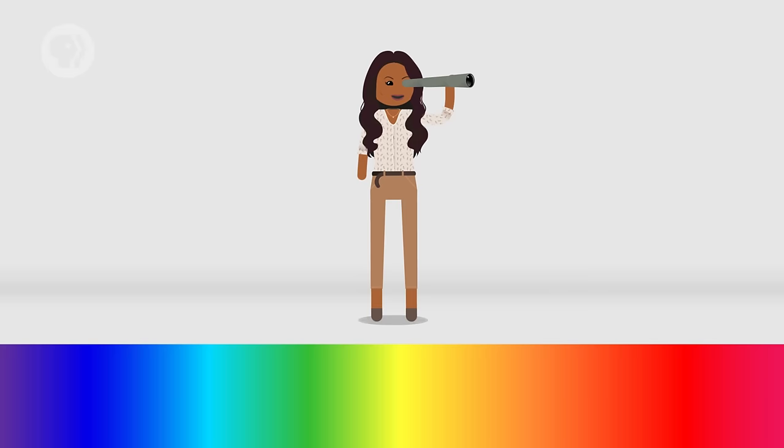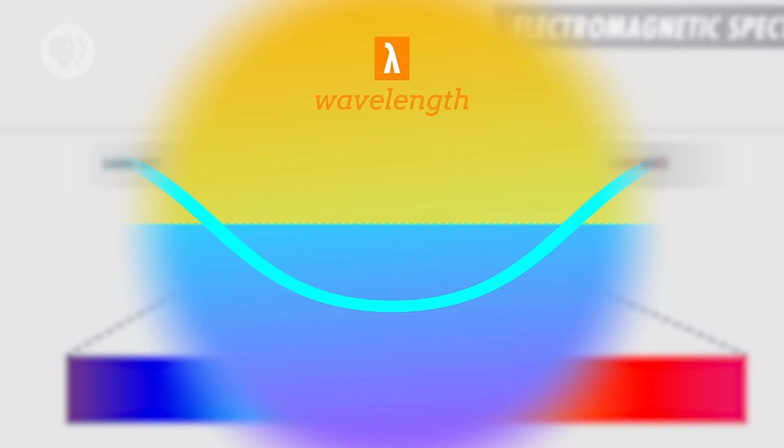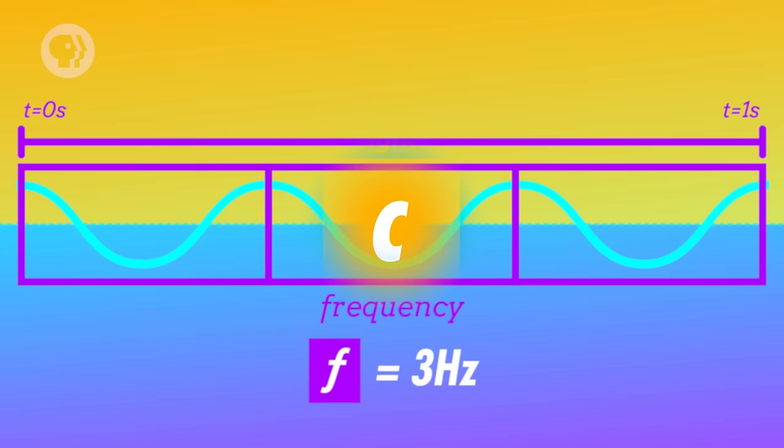Every electromagnetic wave carries energy through space and can reflect off some materials while passing through others. But visible light is just one small part of the electromagnetic spectrum. Like waves in the ocean, electromagnetic waves can vary in their wavelength, amplitude, and source. The wavelength is the distance between the peaks of the wave, and the frequency is how many times a wave peaks in a given second. A wave's speed is equal to its frequency times its wavelength, and since the speed of light is constant, you can easily find the frequency if you know the wavelength, and vice versa.